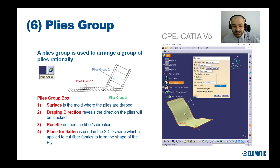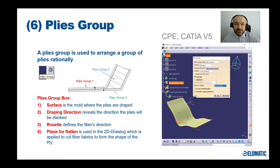Flattening is used when you want to produce drawings showing how the fiber fabric looks when flattened and cut, so that fibers can be cut to the proper size.